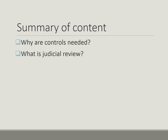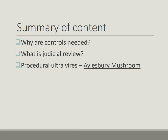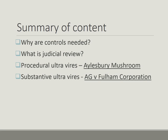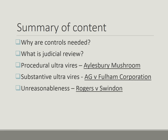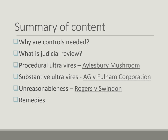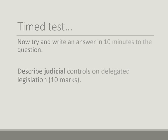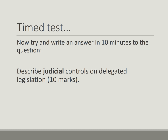In summary, what you need to include is: why controls are needed; what judicial review is; procedural ultra-vires with the example of Aylesbury Mushroom; substantive ultra-vires with the example of Attorney General v. Fulham Corporation; unreasonableness with the example of Rogers v. Swindon; and lastly, the remedies available. Your challenge now is to try and write an answer in 10 minutes to the question: Describe judicial controls on delegated legislation.